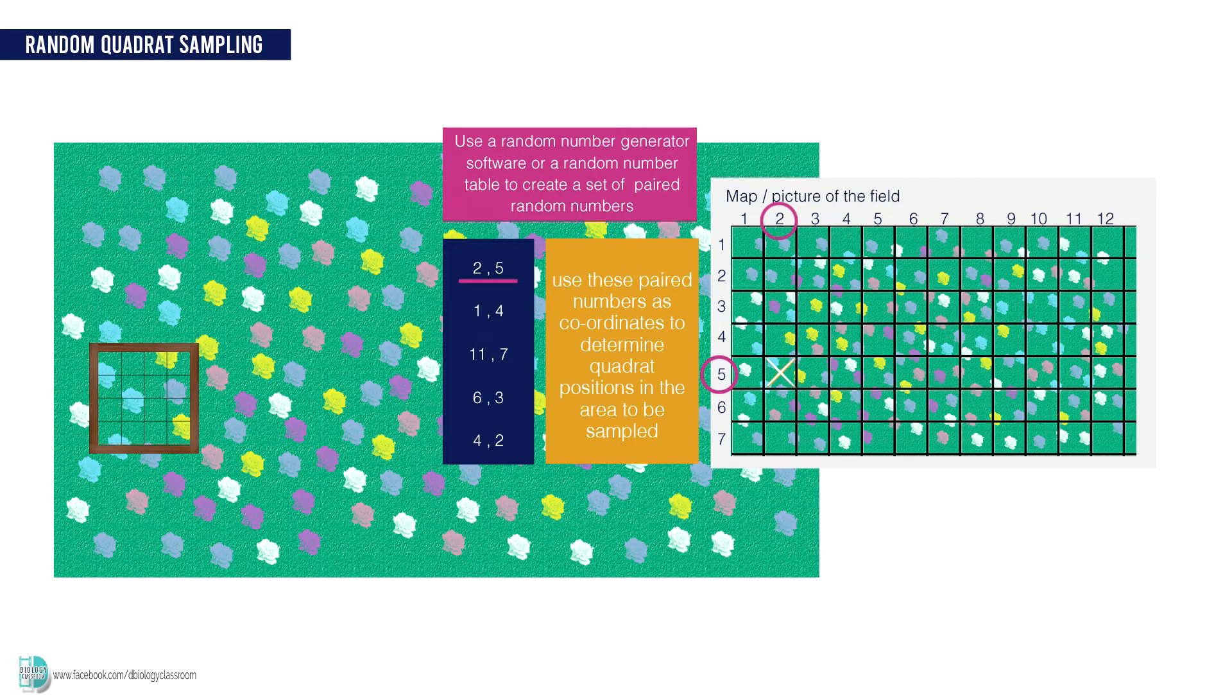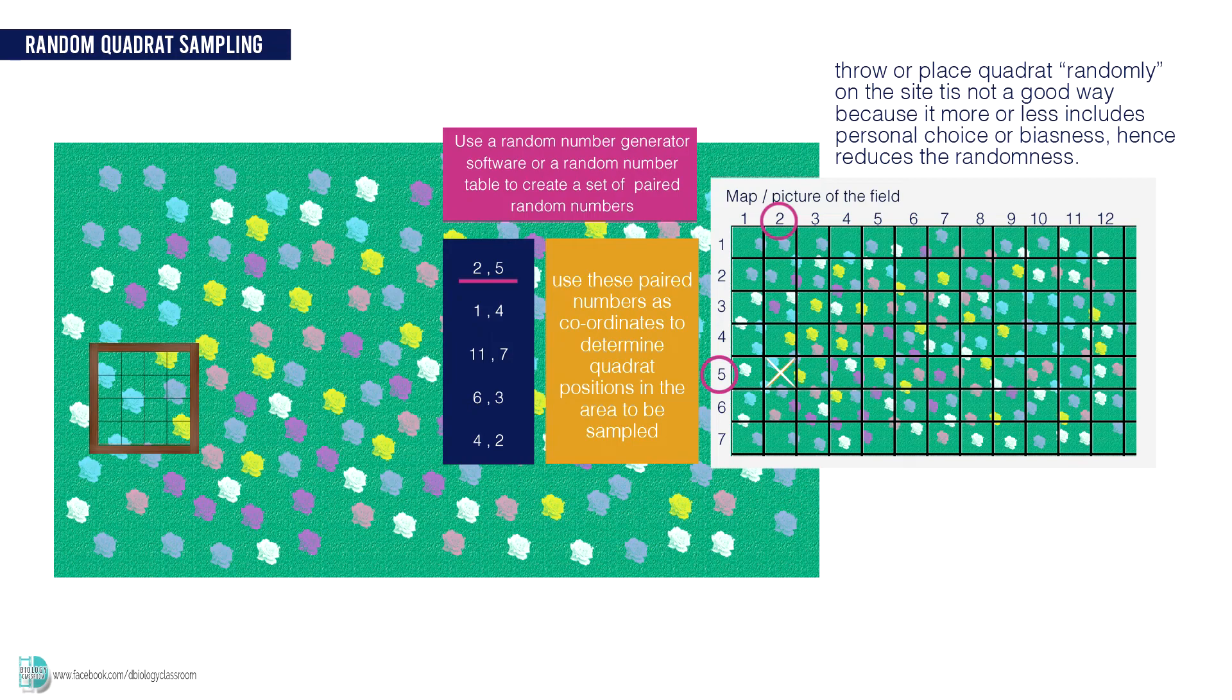Some people do not generate random numbers. They draw or place the quadrat randomly on the site to carry out the sample. This is not a good way because it more or less includes personal choice or biasness, hence reduces the randomness of the sampling.